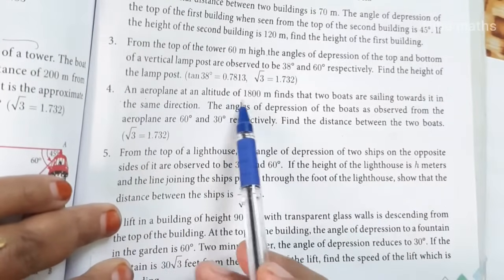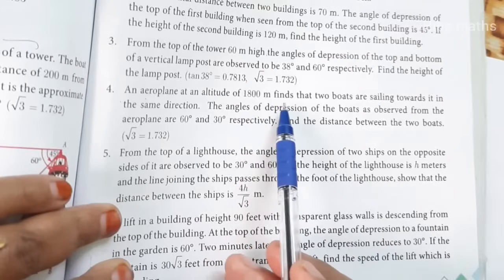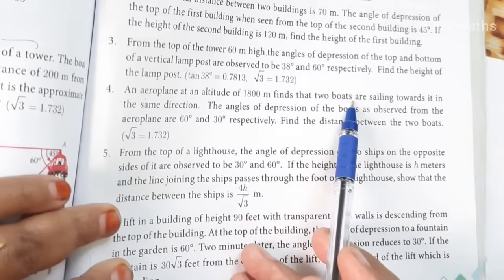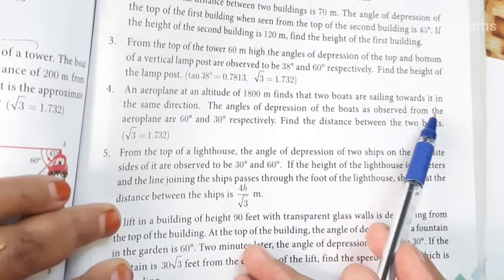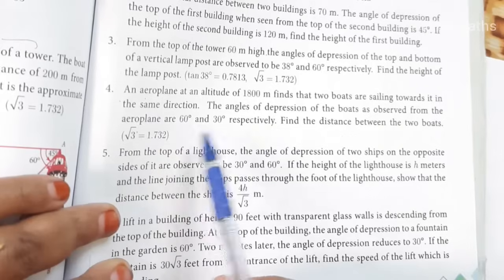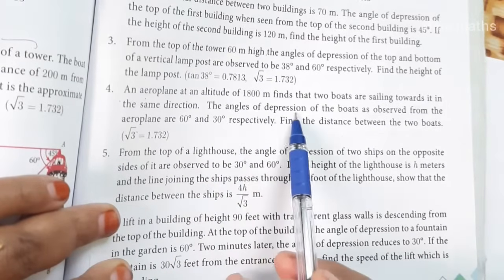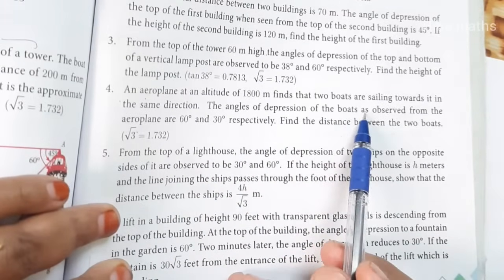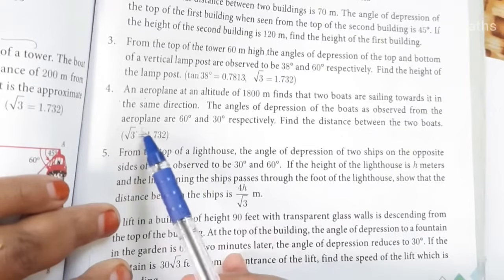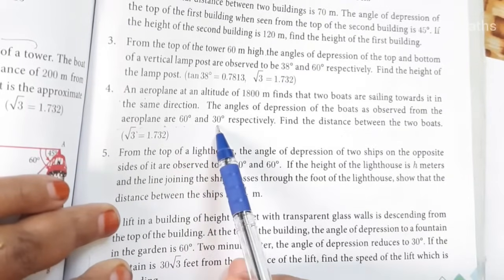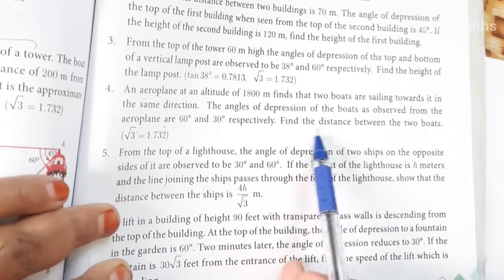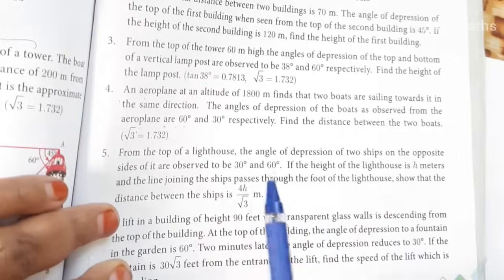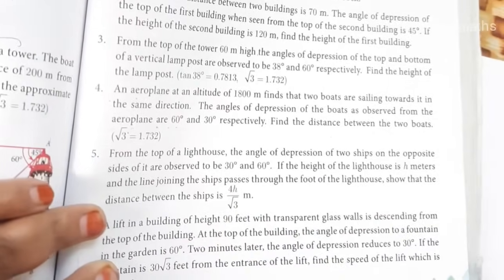An aeroplane at an altitude of 1800 meters finds that two boats are sailing towards it in the same direction. The angles of depression of the boats as observed from the aeroplane are 60 degrees and 30 degrees respectively. Find the distance between the two boats.